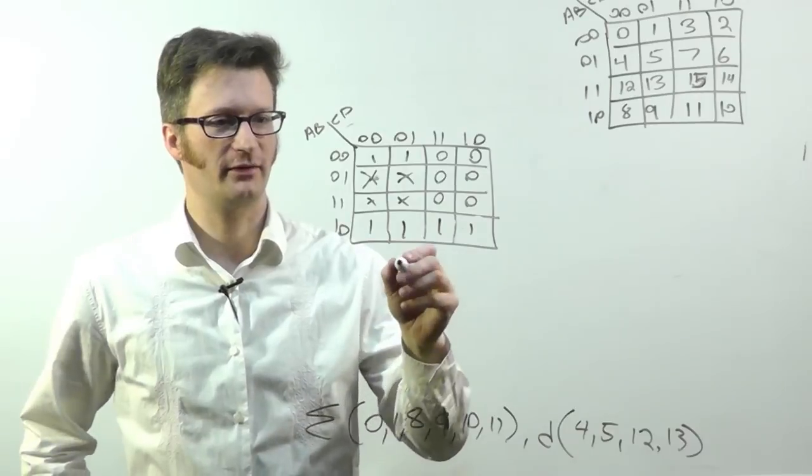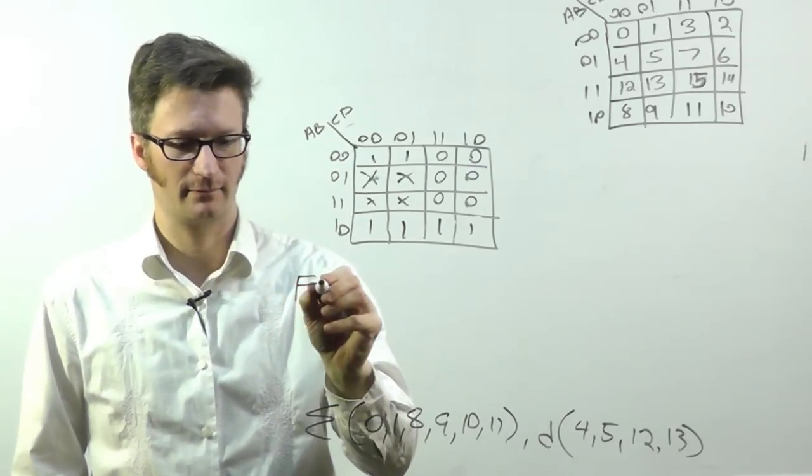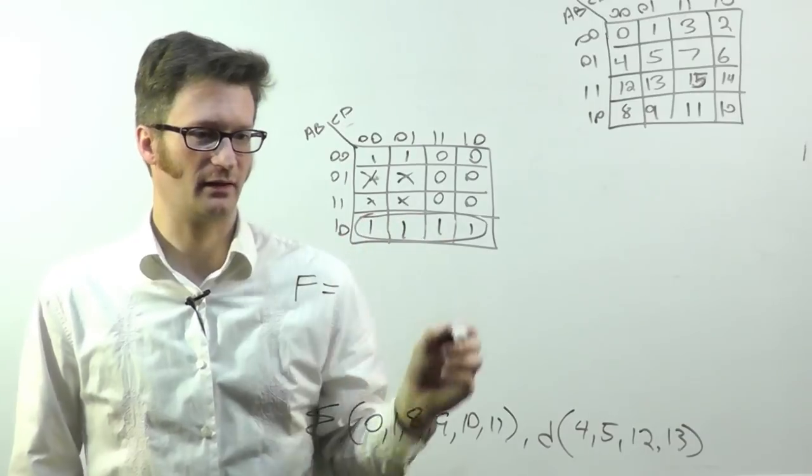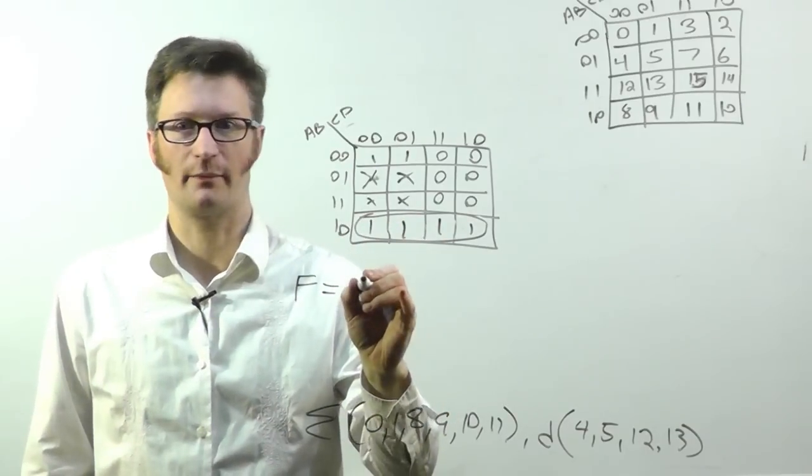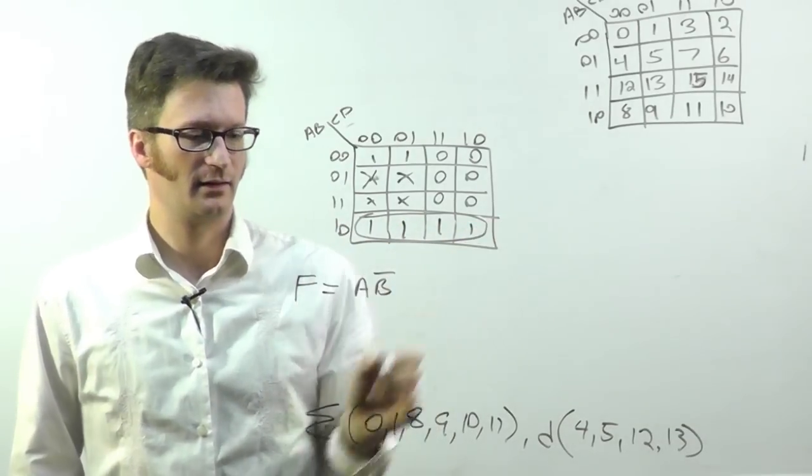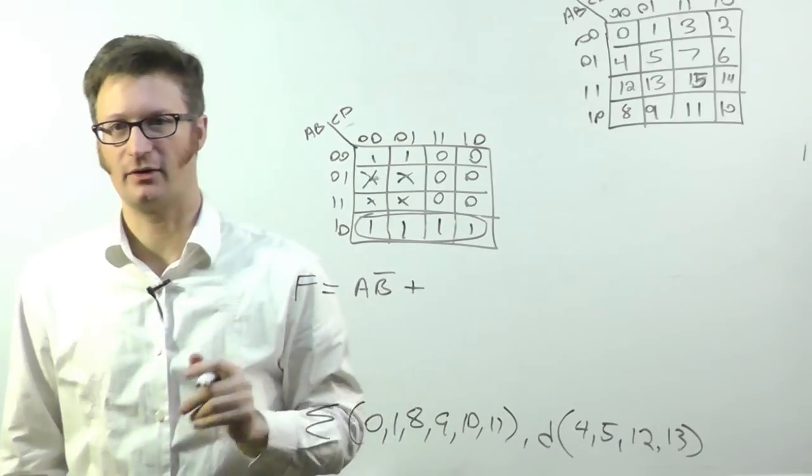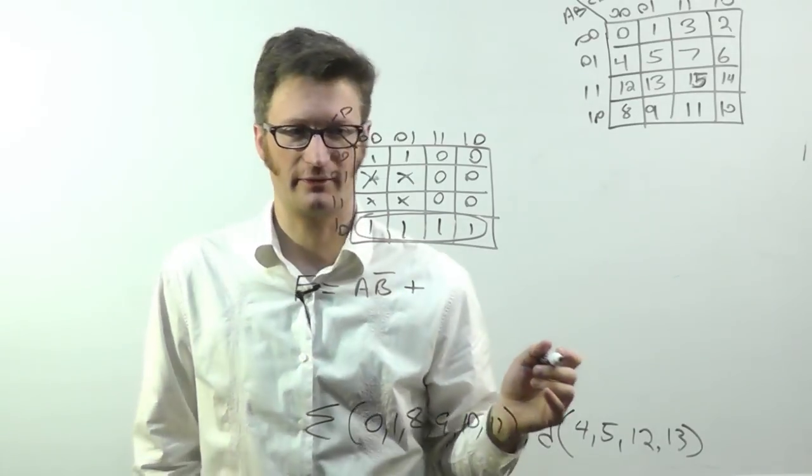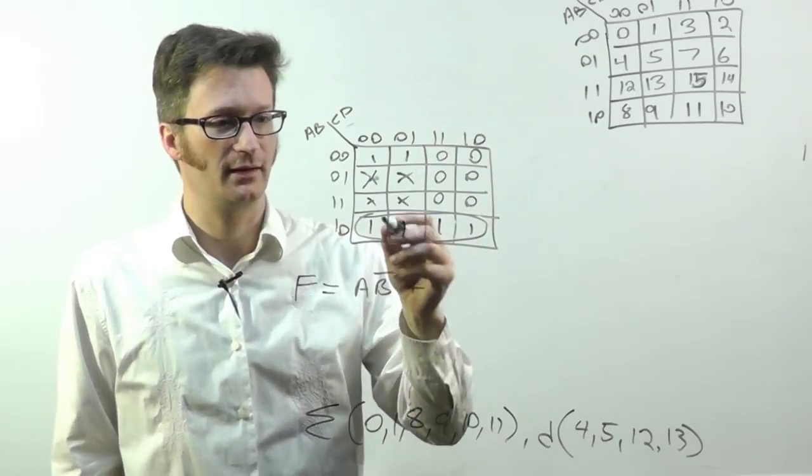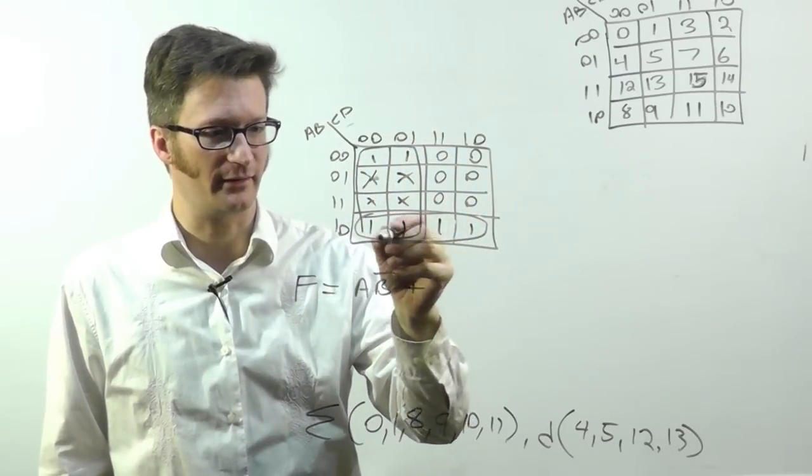So what I'm going to do is first let's stick with what we know. Here I have a grouping. And what's common to them is A, B bar. Now the beauty of don't care is that you can use them however you want it. So if I wanted this one to be a 0, it could be. That's fine.